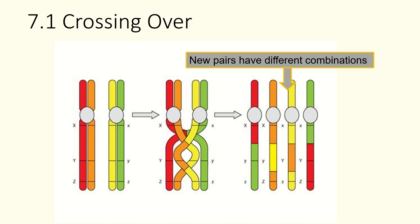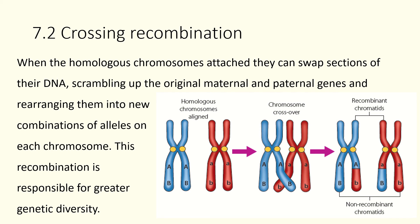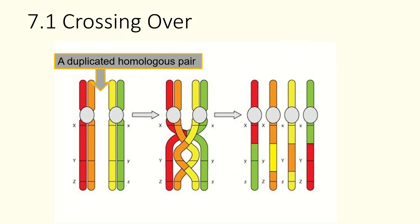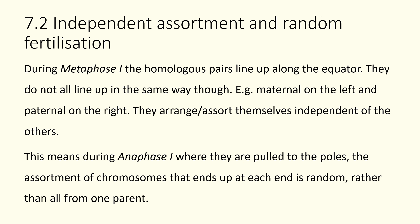So far we've seen that fertilization creates genetic variation through random allocation of genes into every egg or sperm, and crossing over creates completely new chromatid arrangements, generating huge genetic diversity. Then we have independent assortment: during metaphase one, the homologous pairs line up along the equator, but they don't all line up in the same way — it's completely random.